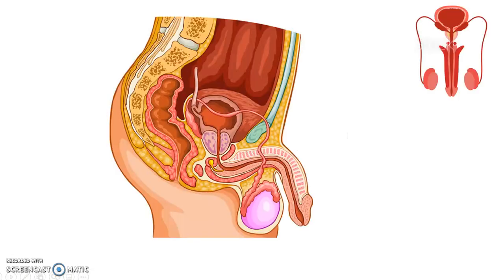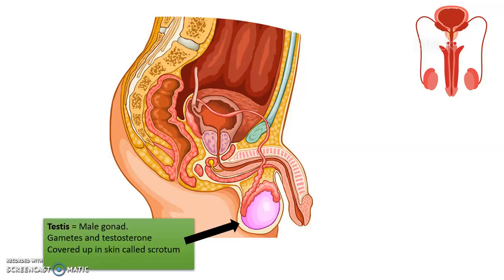We're going to start with the male reproductive system. The first part is the gonad — the male gonad. The organ that produces the actual sex cells is the testes. It also has the function of producing the male hormone known as testosterone. The testes are covered by a skin sac known as the scrotum, which controls the temperature of the testes by pulling them into the body or moving them outside the body to lose heat.